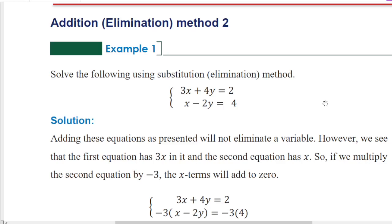This is an example: 3x plus 4y is equal to 2, and x minus y is equal to 4. So working through this, 3x plus 4y minus 2y is equal to 2y, leading to expressions like 2x plus 5y is equal to 1x.